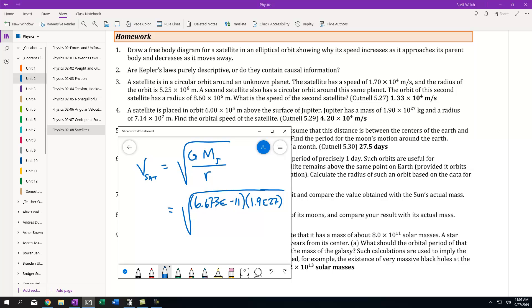And then we divide by the radius. Now, we have to remember the radius of the orbit is not the distance above the surface of the planet. We have to include the distance from the center of the planet to the surface. So we have 6 times 10^5 meters above the surface, but we have to add to that the radius of the planet, which is 7.14 times 10^7.